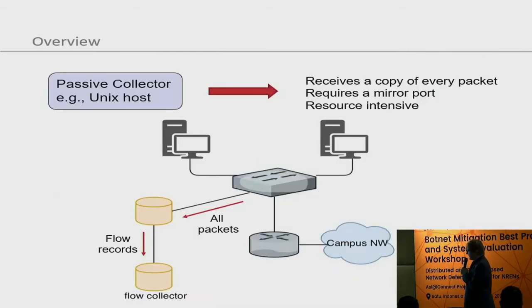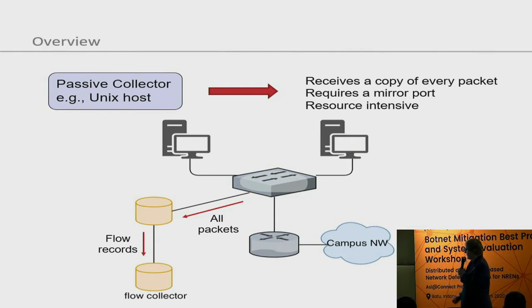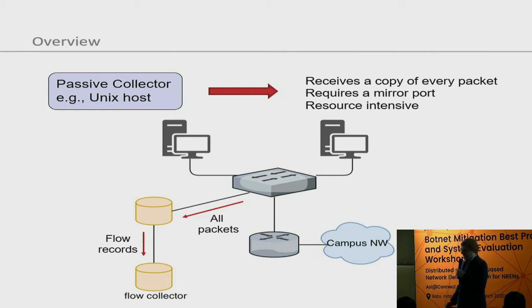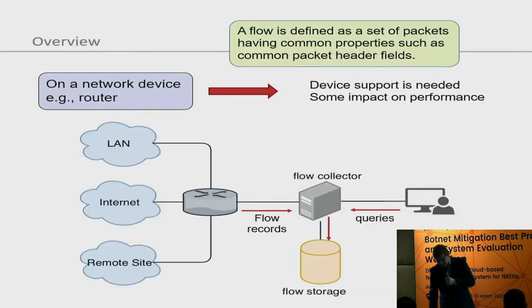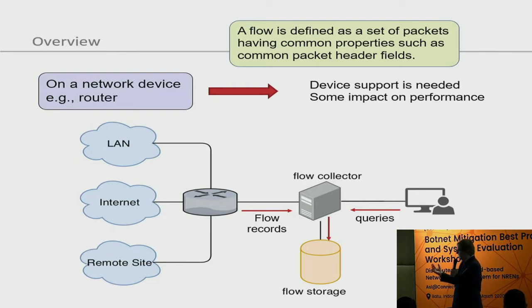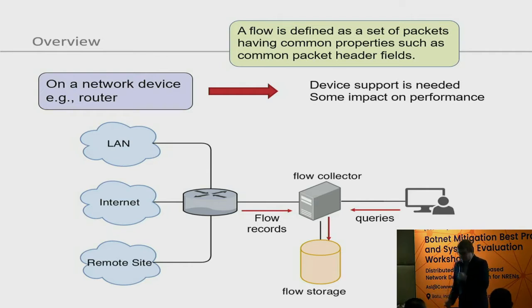That could look like this: we have a router in the middle with multiple machines, and our flow analyzer receives a copy of every single network packet, which requires a mirror port. That is, of course, resource intensive because we are doubling the traffic. We use all packets to generate our flow records and save them in the flow collector. Alternatively, a router can serve as the flow collector itself, letting users query it directly.